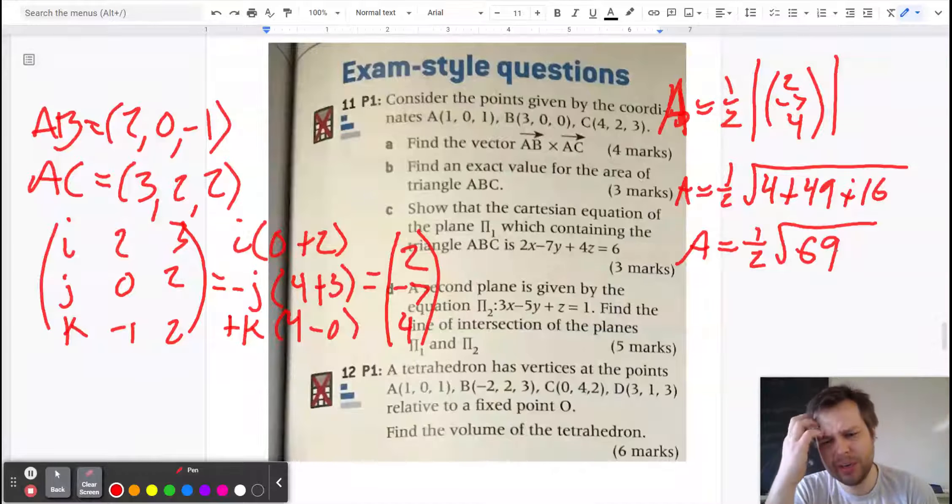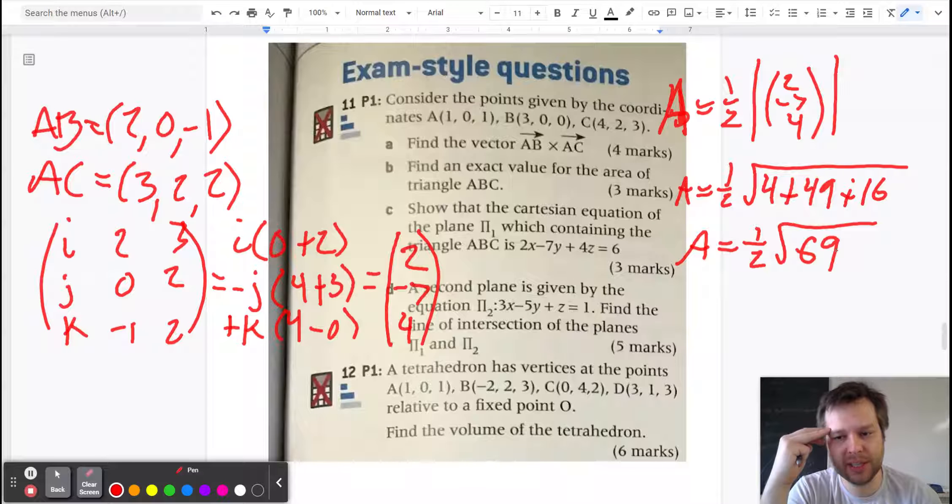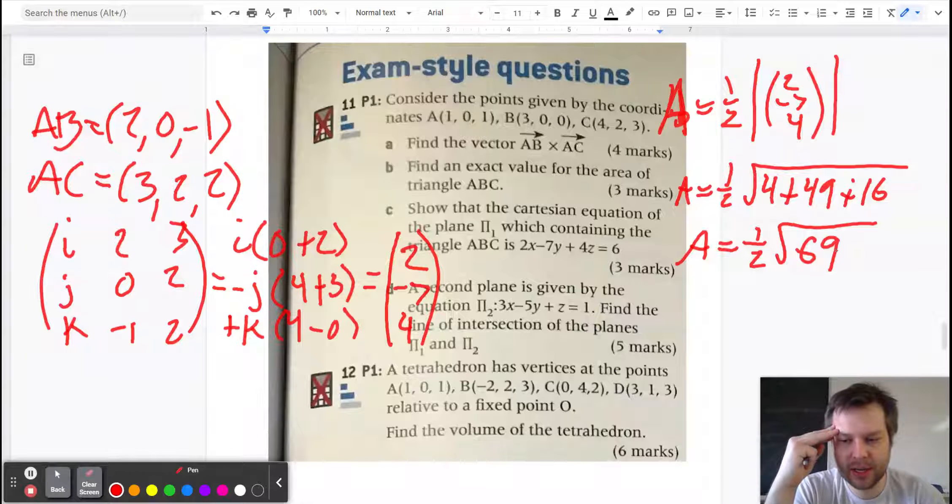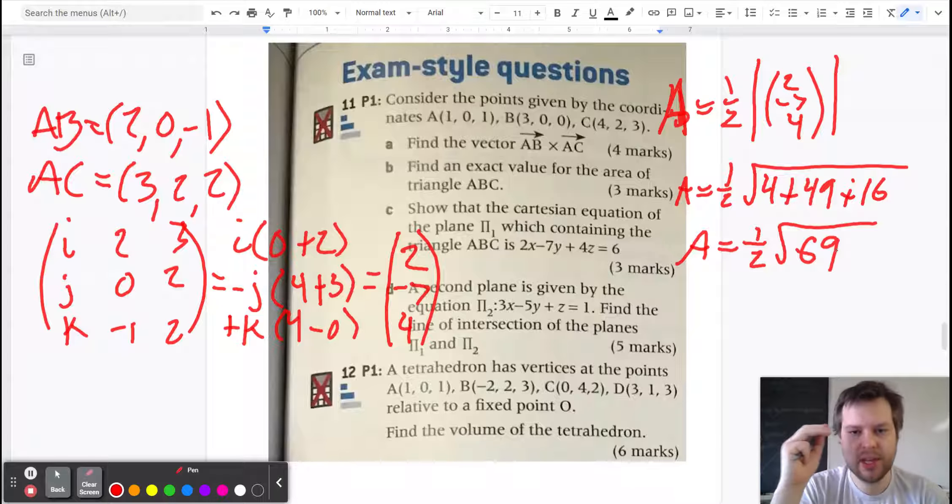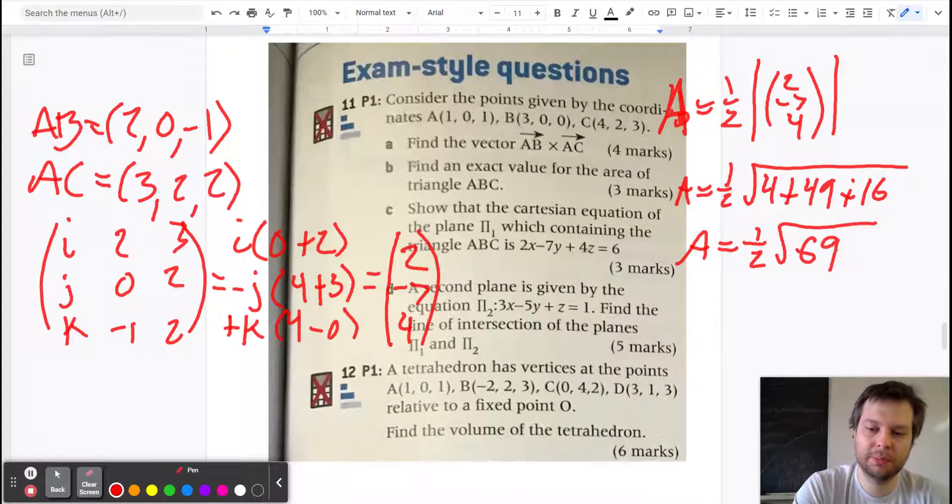Just recall again that when you have a normal vector, when you do the cross product you get a normal vector.